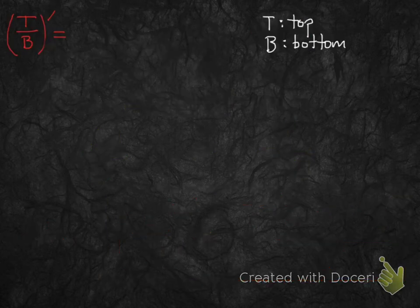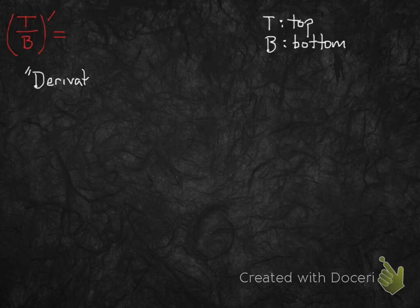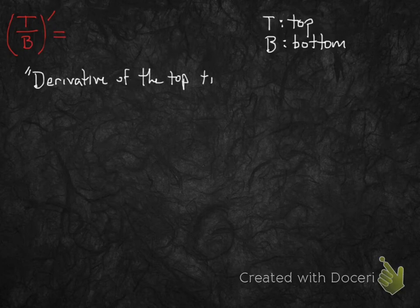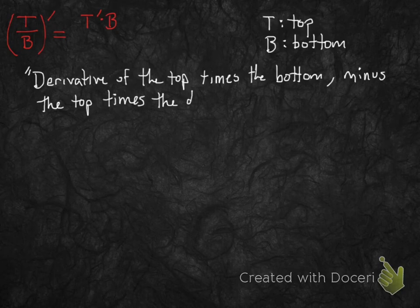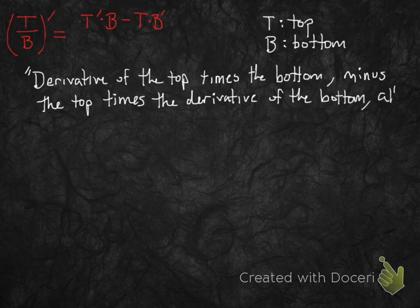When you have one function divided by another — a top and a bottom — and you want to take the derivative, here's what you do. You take the derivative of the top times the bottom; in symbols that's t prime times b, minus the top times the derivative of the bottom — in symbols that's minus t times b prime — all over the bottom squared.